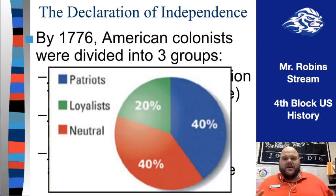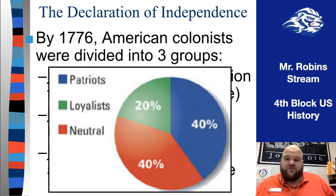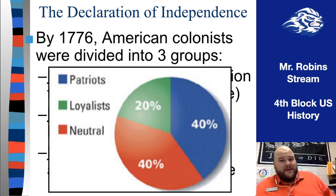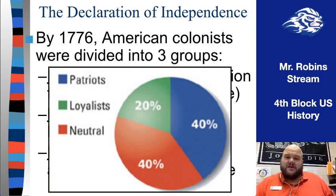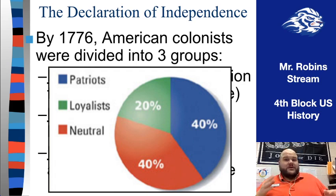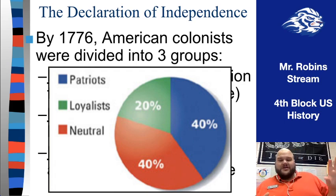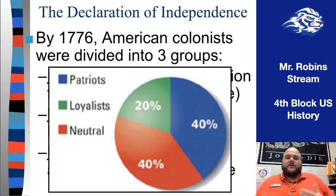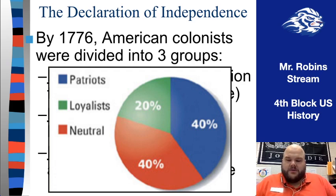By 1776, about 40% of the American population were straight-up patriots wanting independence. Then about 20% — a smaller but still sizable group — were loyalists wanting to stay in the British Empire. That last group, the neutrals, were also about 40% and could really go either way. If most of them go to the loyalists, that becomes the bigger group, but if just some of them go to the patriots, that makes a majority. So it really came down to persuading those folks in the middle that independence ought to be pursued.